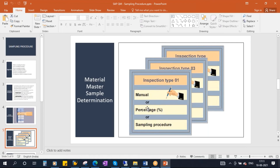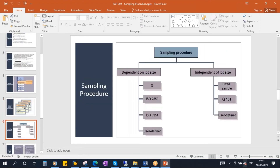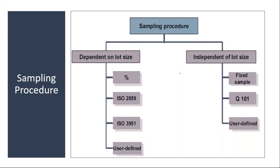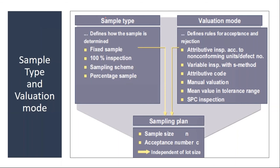Usually they don't maintain it here — they assign it to the characteristic in the inspection plan. Sampling procedures are basically two types: one is dependent on the lot size, like some percentage or some ISO standard related; and another is independent of the lot size, such as a fixed lot size or full 100% quantity. Sampling procedure is a combination of sample type plus valuation mode. There are four types of sampling procedures: fixed sample, percentage sample, 100% inspection, and sampling scheme. We will create all of these.